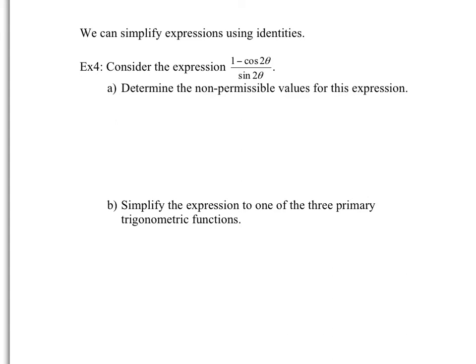Last example — we're going to tie this into identities from exercise 13. We can simplify expressions using these identities. For part A, determine the non-permissible values of the expression. The non-permissible values occur when you divide by zero. The numerator cos 2 theta has no denominator, so no issue there. However, sin 2 theta cannot equal zero. We can rewrite sin 2 theta as 2 sine theta cos theta, which means both sine theta and cos theta cannot equal zero individually — each gives separate non-permissible values.